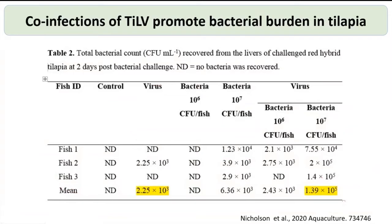When examining bacterial and viral burdens, the co-infection groups — challenged at 10⁶ and 10⁷ bacteria together with the virus — showed more bacteria could be isolated from organs compared to bacterial-only groups at the same concentrations, suggesting the virus caused interactions that suppressed host immunity and allowed bacteria to colonize the host organs more effectively.